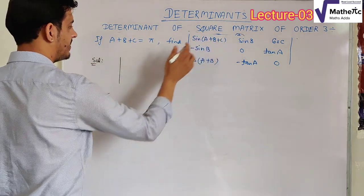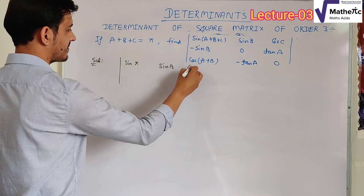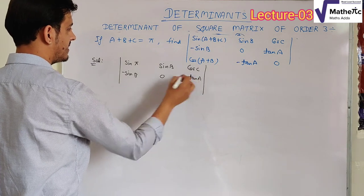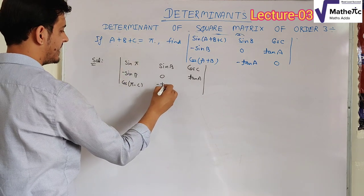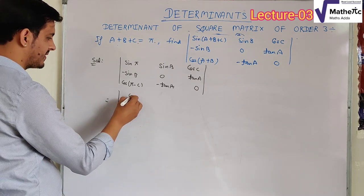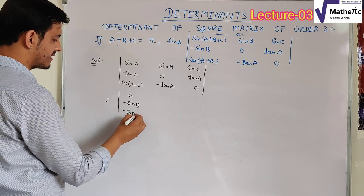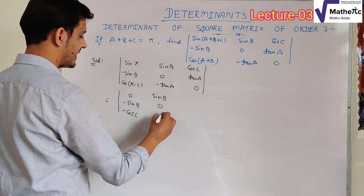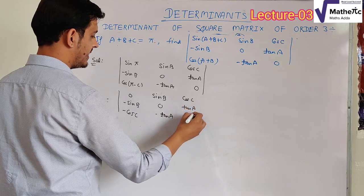Since a+b+c = π, sin(a+b+c) = sin π = 0. Also, cos(a+b) = cos(π−c) = −cos c, using the formula cos(180°−θ) = −cos θ from 11th class. So the matrix becomes: first row [0, sin b, cos c], second row [sin b, −sin b, 0], third row [−cos c, −tan a, 0]. Also the element tan a remains, and we have a simplified matrix.